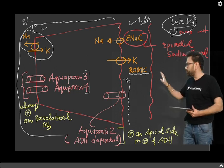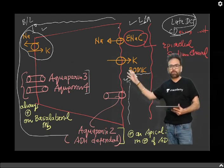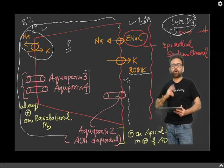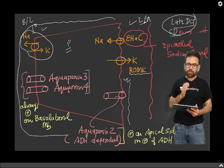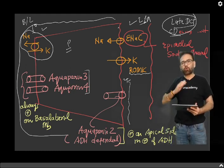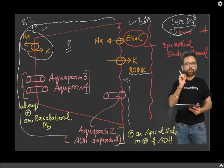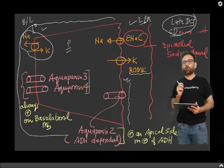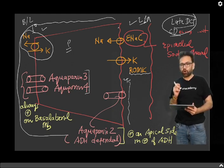This is the big principal cell. There is the lumen and the principal cell. There are two cells mainly in the collecting duct: one is called the principal cell and the other is called the intercalated cell. The principal cell has a set of actions for two hormones — one is ADH and the other is aldosterone.